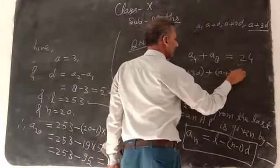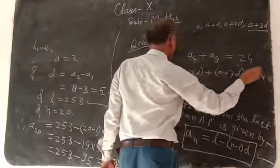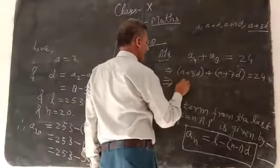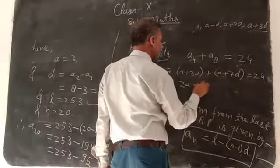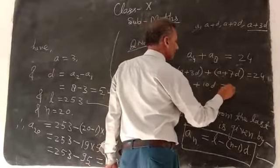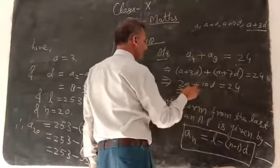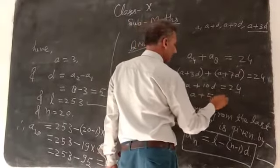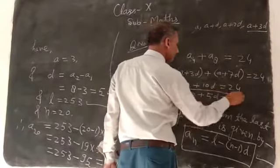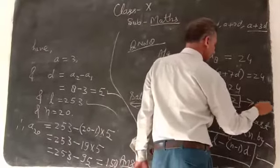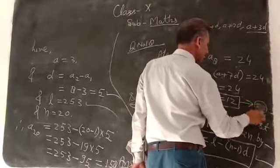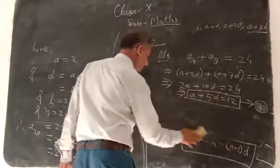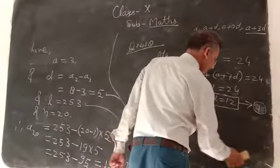A8 becomes A plus 7d, which becomes equal to 24. So, adding these, A plus 3d and A plus 7d, 2A plus 10d is equal to 24. Divide by 2, so A plus 5d is equal to 12.